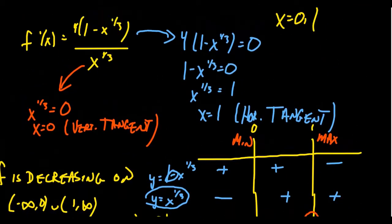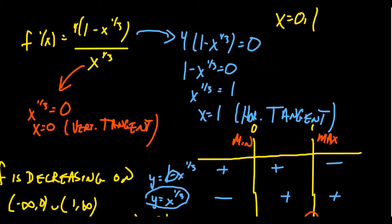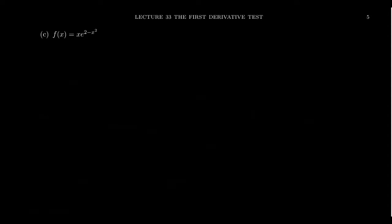If you wanted to use test points instead of factorization, you could pick something larger than 1, something between 0 and 1, and something less than 0. Since there are no whole numbers between 0 and 1, perfect cubes work well as test values — for example x = 8, x = -1, and x = 1/8, since 1/8 is a perfect cube fraction.